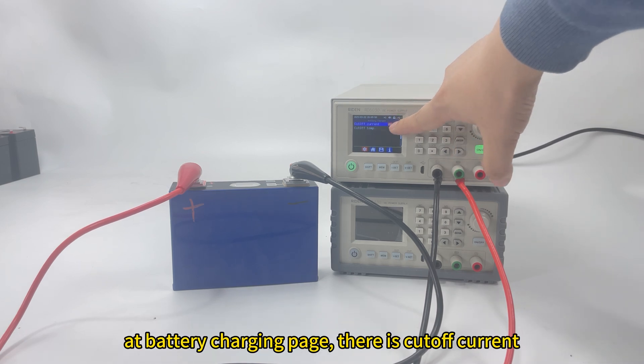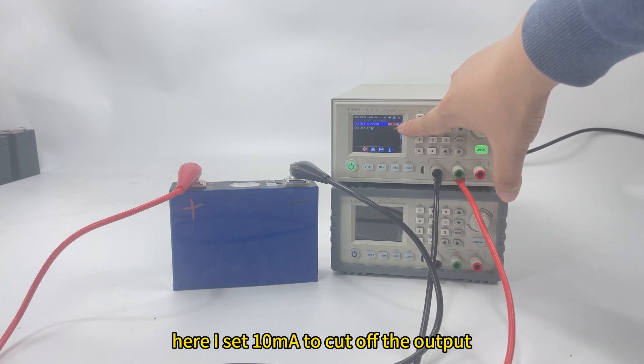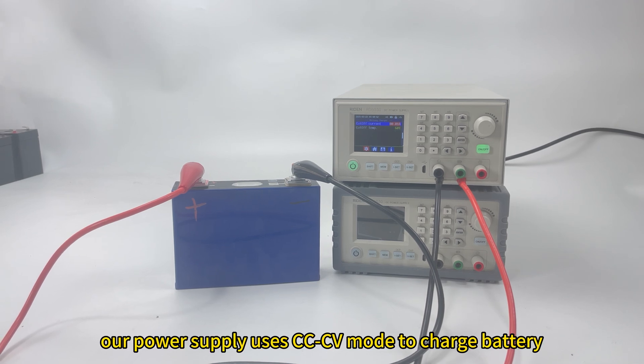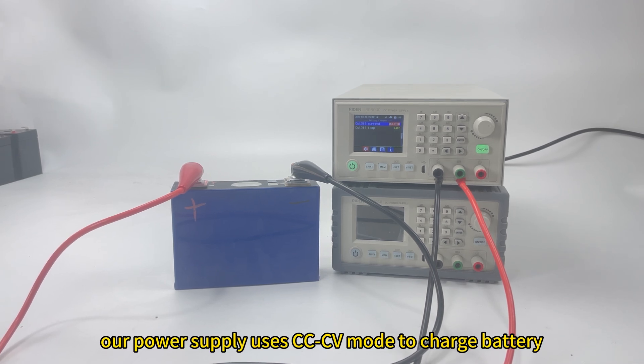You can see there is a battery charger page here. And you can see there is a cutoff current. Here I set 10 mA to cutoff the current. You need to know that our power supply uses constant current and constant voltage mode to charge the battery.